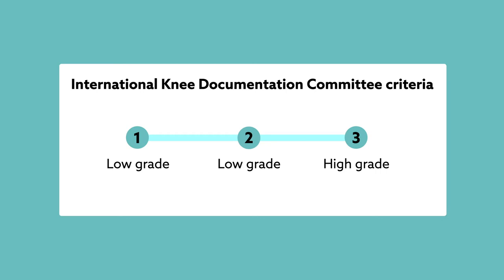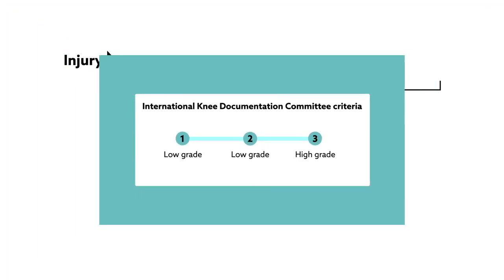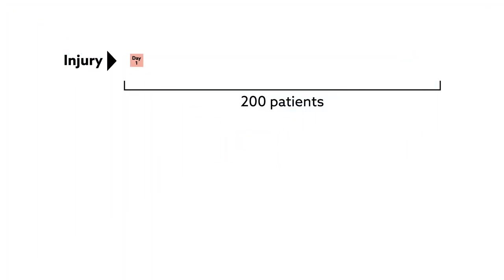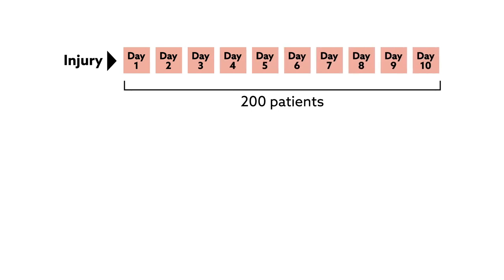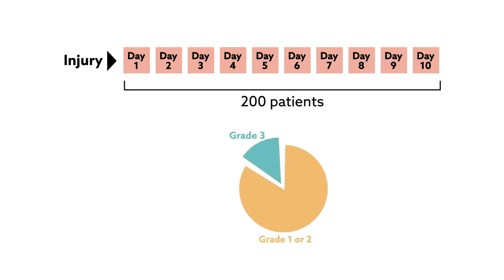To understand the circumstances that give rise to such pivot shifts, researchers examined 200 patients undergoing ACL reconstruction within 10 days of injury. 35 had a grade 3 pivot shift, whereas 165 had a grade 1 or 2 pivot shift.